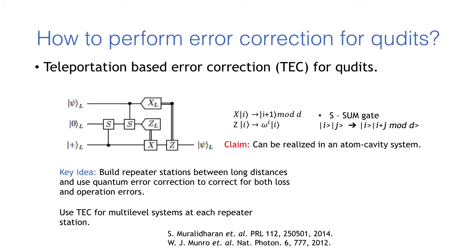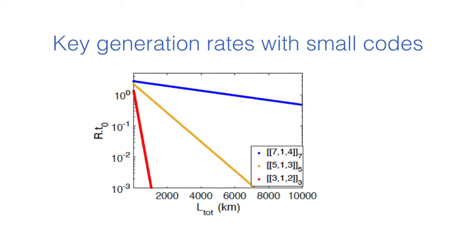Now we have an efficient method to perform error correction for qudits, how do we transmit quantum states across long distances? One solution for this is to build repeater stations and have a teleportation based error correction procedure to correct for loss and operation errors for quantum polynomial codes at these stations.